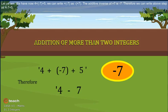Therefore, we can write above step as 4 minus 7 plus 5.